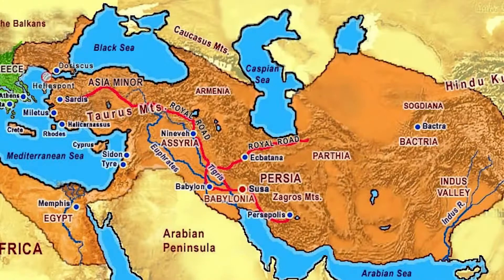The Persian Wars that Herodotus relates are a series of conflicts that took place in the first half of the 5th century BC and lasted for more than 50 years. From early times, the Greeks sent out colonists throughout the Mediterranean, and many of them settled along the coast of Asia Minor. With the growth and expansion of the Persian Empire, these Greek colonies were conquered and became subject to the Persians. Beginning in 499 BC, some of these Greek cities rebelled in what is known as the Ionian Revolt.